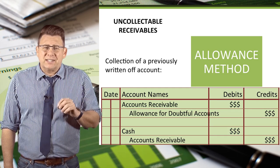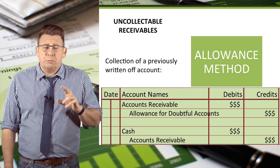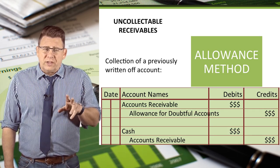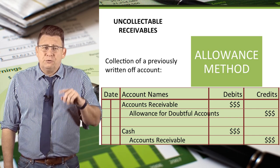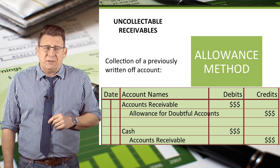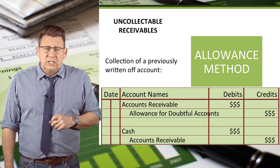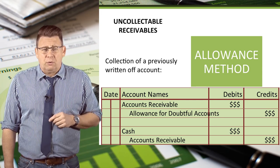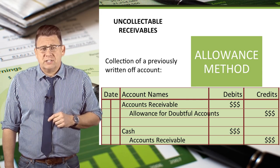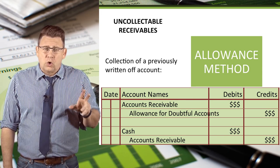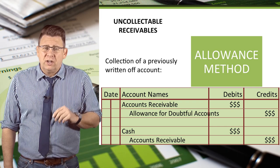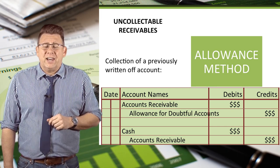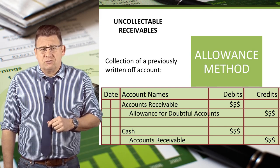Sometimes we collect an account that was previously written off. To do this, we need to first reverse the write-off entry — debit accounts receivable and credit the allowance for doubtful accounts. Then we can record the collection from a customer, which is a debit to cash and a credit to accounts receivable.